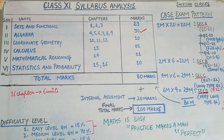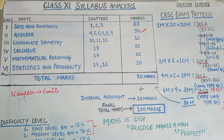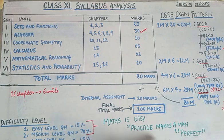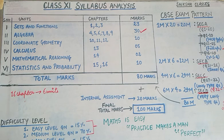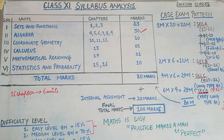An average student can easily score 90 plus with practice. So focus on practice — in maths it is practice that makes perfect. Starting from 11th math, practice consistently so that you can build a strong base and score well in 12th as well, achieving 90 plus.